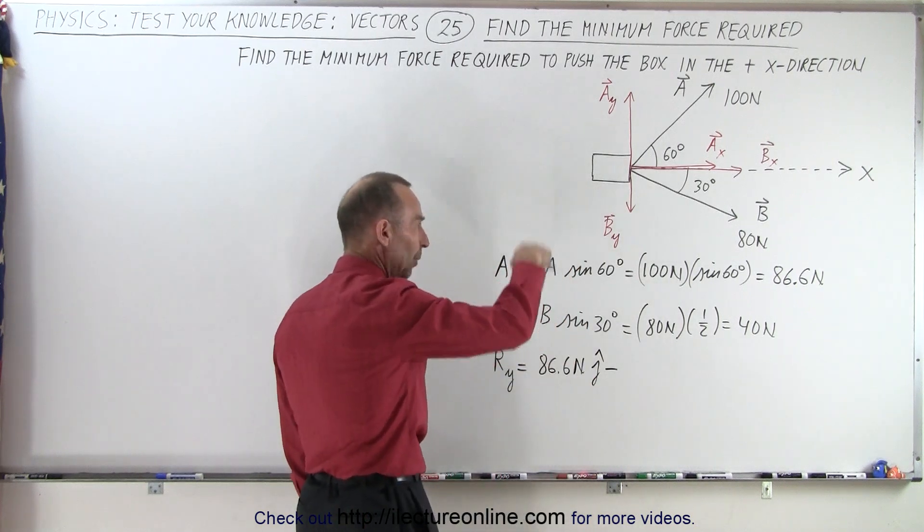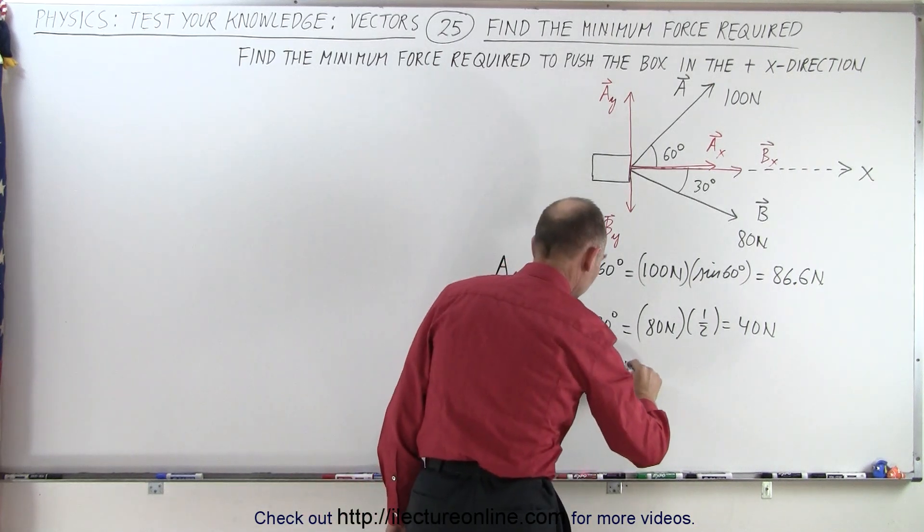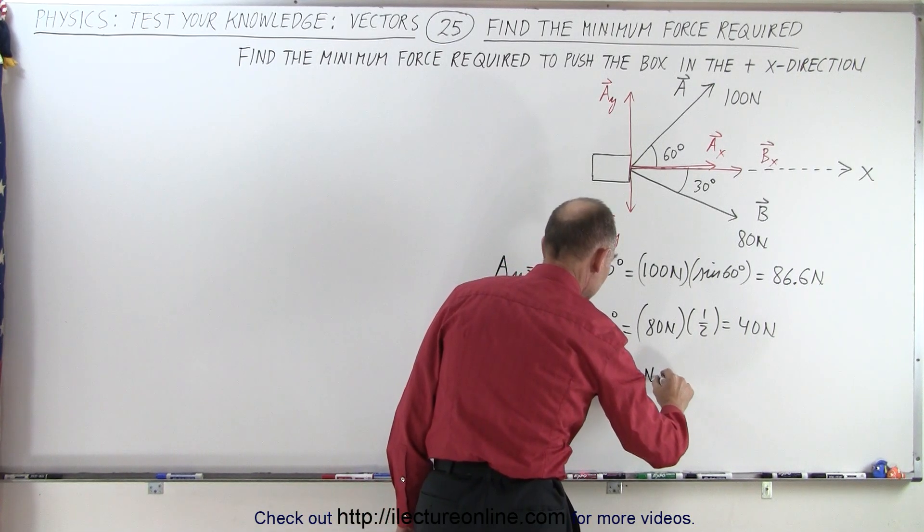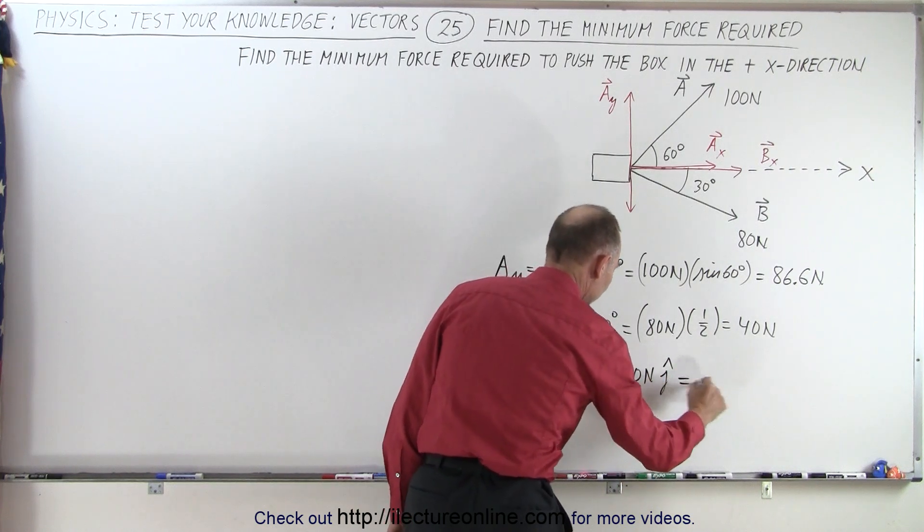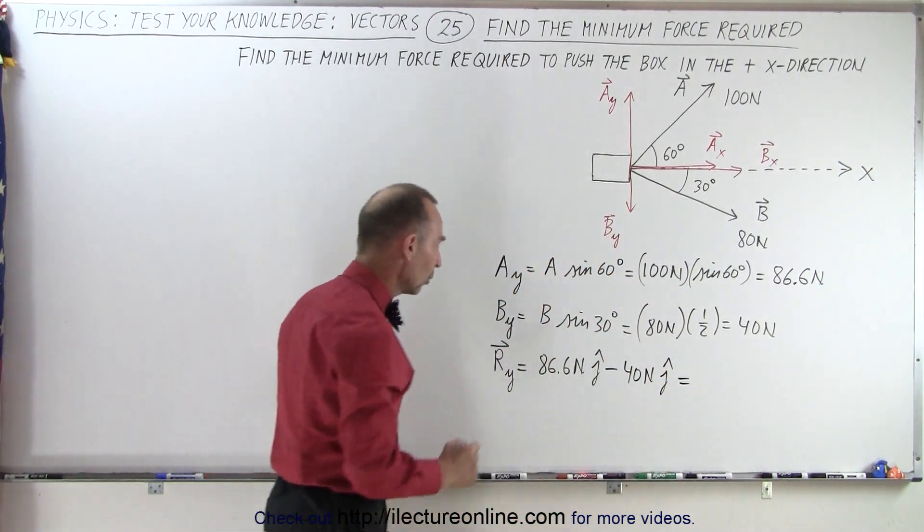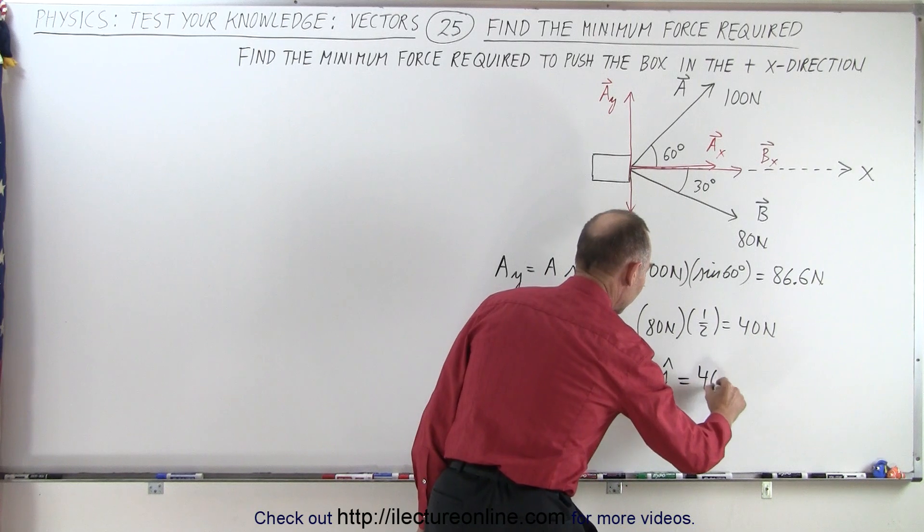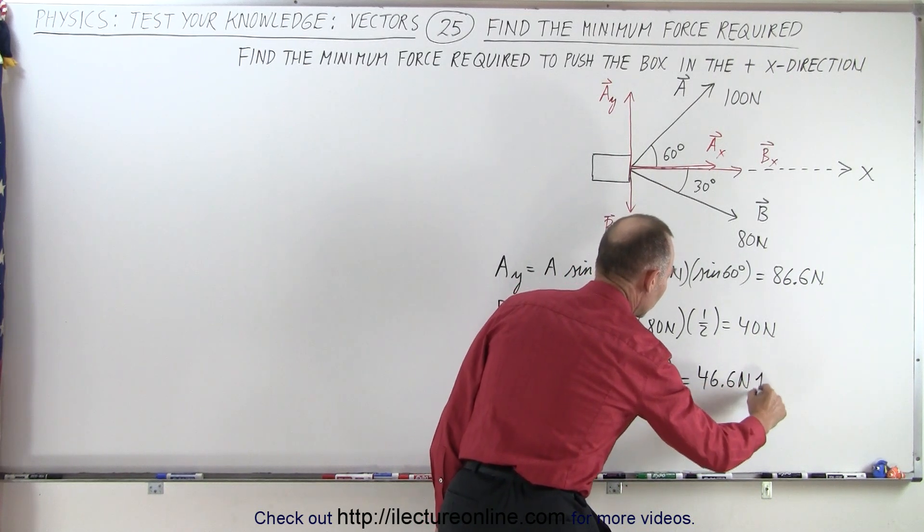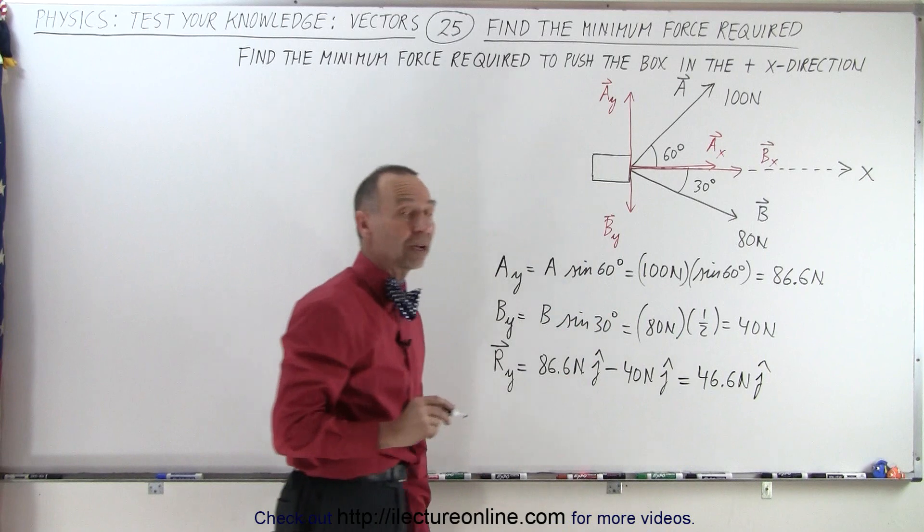minus, because b sub y is pointing downward, minus 40 newtons in the j direction. So the net force in the y direction will be 46.6 newtons in the j direction, and it's a positive direction.